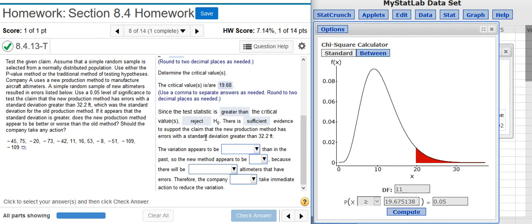So if we have sufficient evidence to support the claim that our standard deviation is now greater than what it was before, that means we have more variation in our process than we did before. The variation appears to be greater than in the past, so the new method appears to be worse. More variation means there's more room for error to creep in, and you're going to be producing more defective products, so there will be more altimeters that have errors.